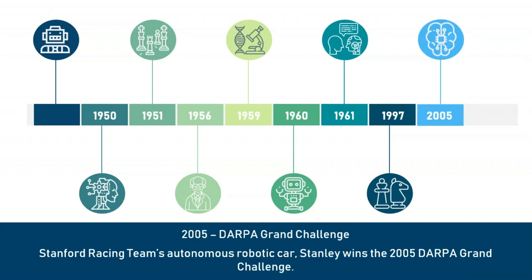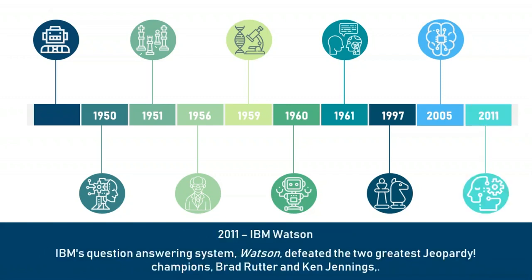In 2005, when the DARPA Grand Challenge was held, a robotic car named Stanley, built by Stanford's racing team, won the challenge. In 2011, IBM's question answering system Watson defeated the two greatest Jeopardy champions, Brad Retter and Ken Jennings. So this was how AI evolved — it started off as a hypothetical situation, and now it's the most important technology in today's world.